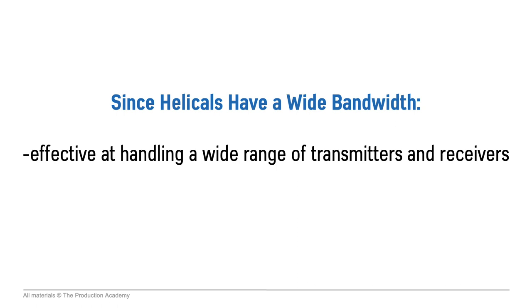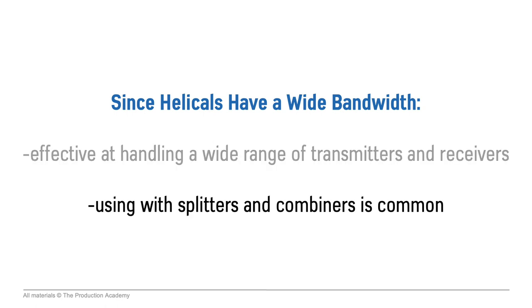One thing to keep in mind: just like all wireless equipment, antennas are made to work in specific frequency ranges. This is important to remember because if we have an antenna that operates in one frequency range and the receiver operates in a different frequency range, then it's not going to work. This can happen especially with whip and shark fin antennas, which have less bandwidth than helicals. But since helicals have a wider bandwidth, they are more effective at handling a wide range of both transmitters and receivers.